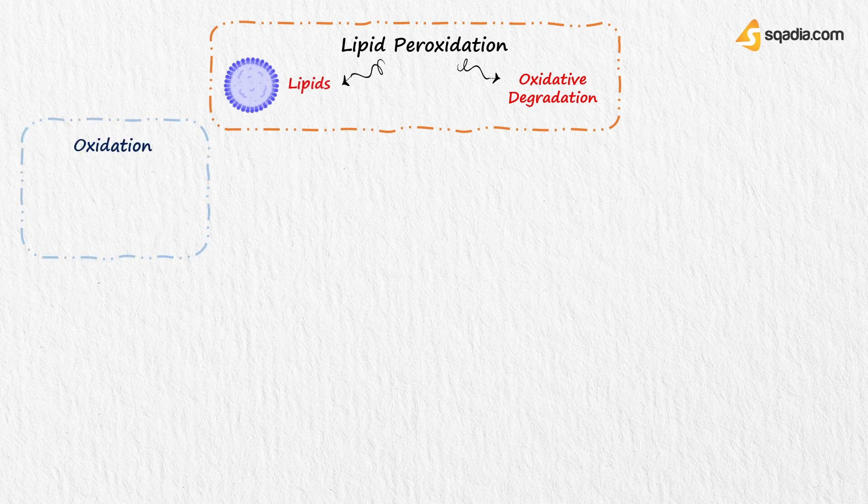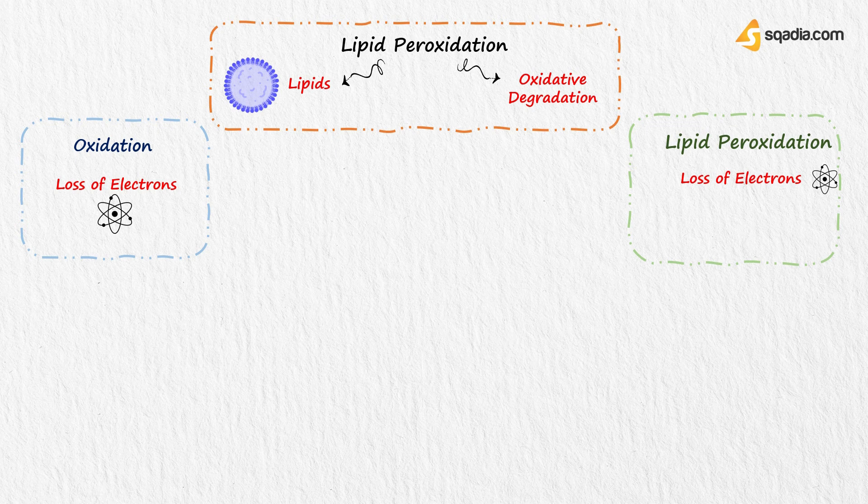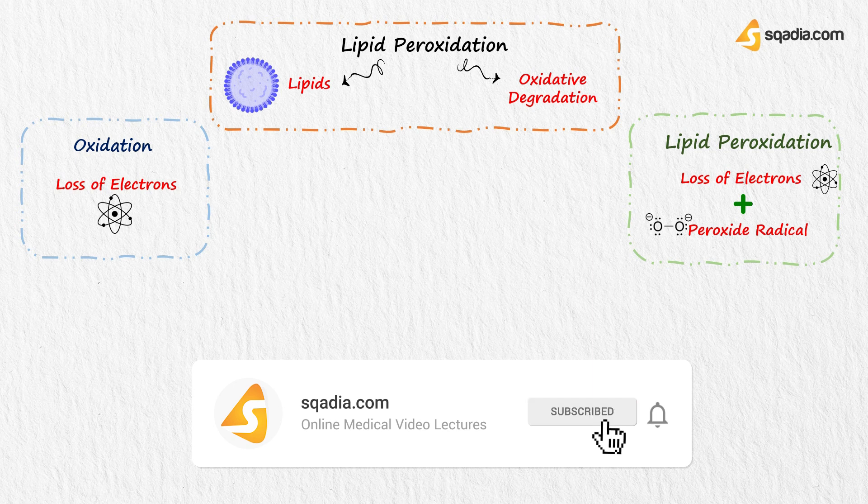Lipid peroxidation is an oxidative degradation of lipids. In oxidation, there is loss of electrons. But in lipid peroxidation, as in oxidation, loss of electrons occurs, but there is also generation of peroxide radical as an intermediate.